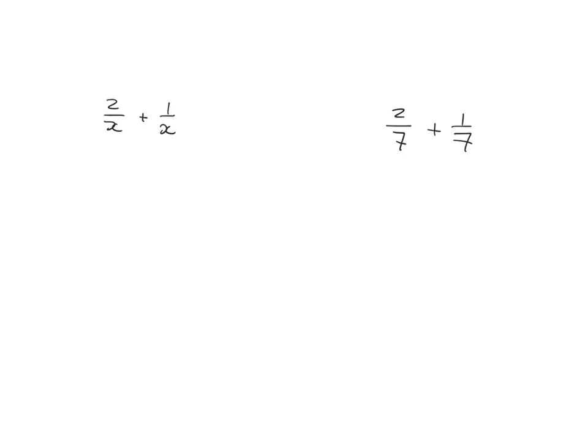All right so hopefully 2 sevenths plus 1 seventh wasn't difficult for you at all. You have 2 sevenths and you add on 1 seventh, you're just going to have 3 of those sevenths. What you've always done with adding fractions, if your denominator is the same you can just add the numerators.